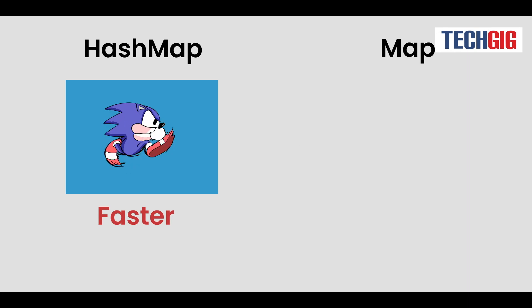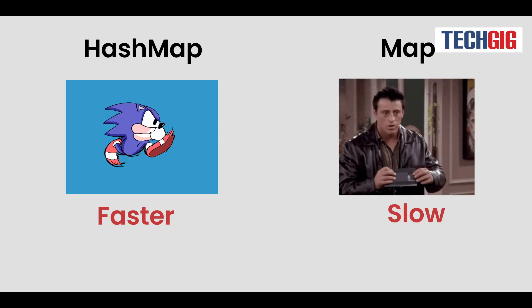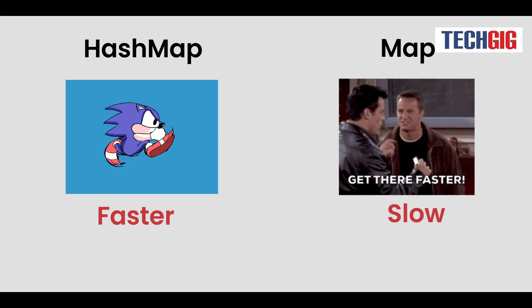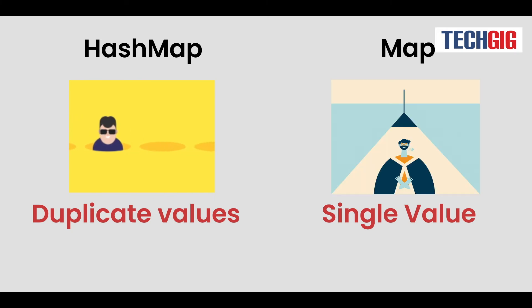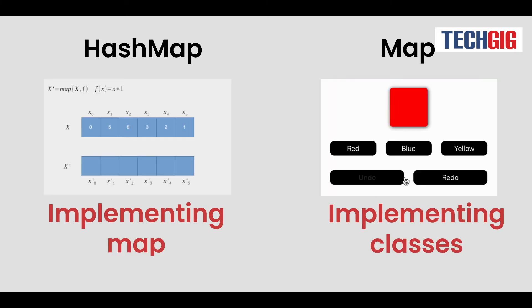HashMap is faster than Map since it does not keep track of the order in which its components are inserted. HashMap, unlike Map, can hold duplicate values. It's feasible to use the Map interface implementing classes to implement it.